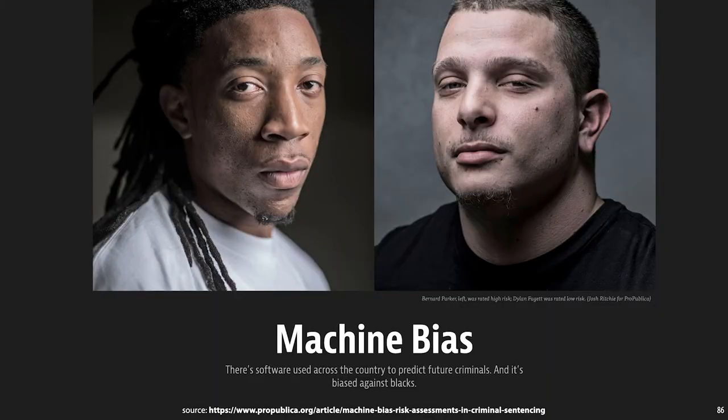We saw an example of this in the first social impact video: a prediction system essentially using machine learning, which predicted the risk of people in prison re-offending when let out. This system, built by a company called Northpoint, showed a strong racial bias. As we saw then, it's not enough just to remove race as a feature, because so long as race or ethnicity can be predicted from the features you do use, your model may be inferring race and using it in its predictions indirectly.